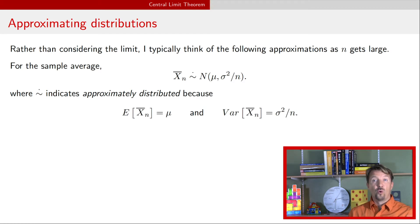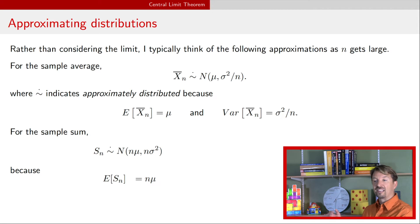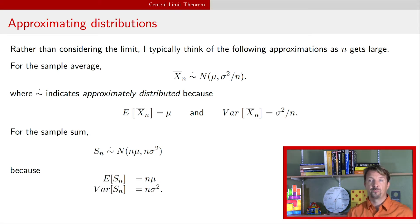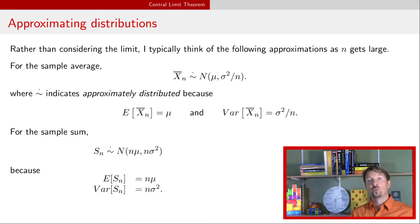The expectation for the sample mean is mu and the variance is sigma squared divided by n. Therefore, the sample mean has an approximate normal distribution with a mean of mu and a variance of sigma squared divided by n when the sample size is sufficiently large. For the sample sum, we do the same thing, but it has a different expectation and variance: an approximate normal distribution where its expectation is n times mu and its variance is n times sigma squared.